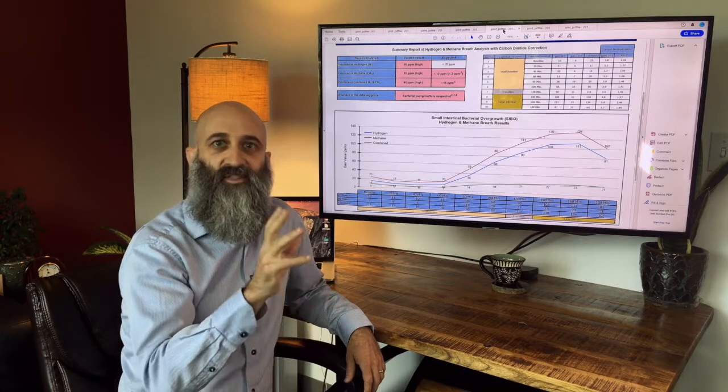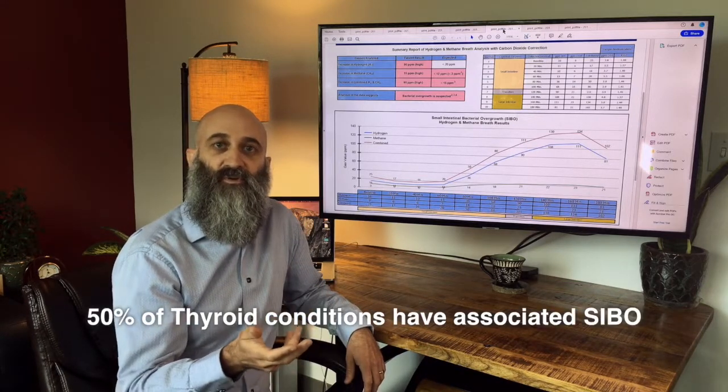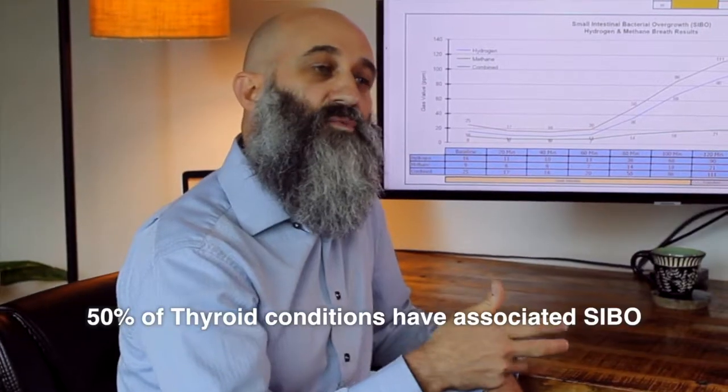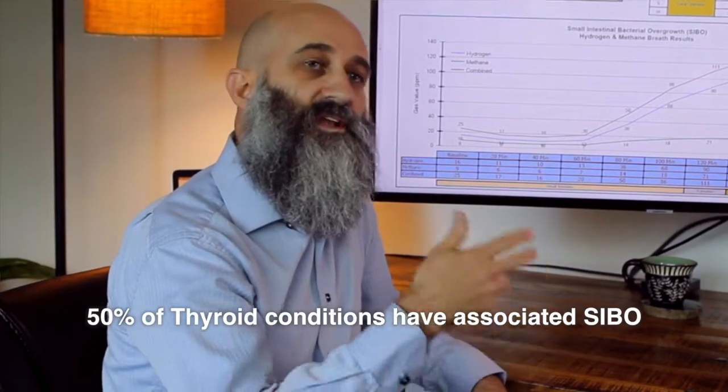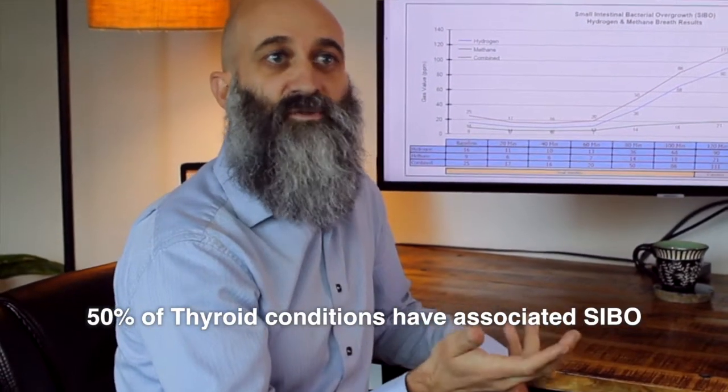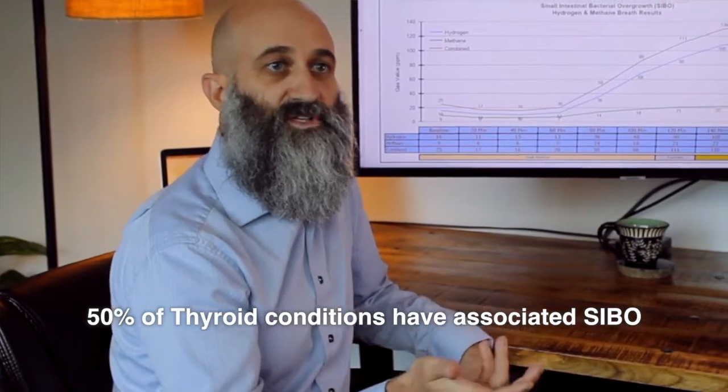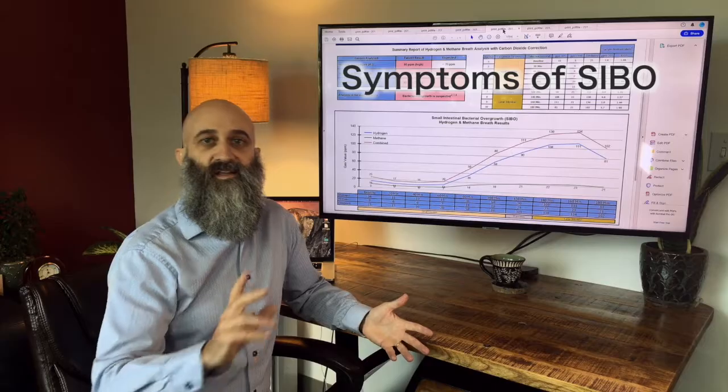Fifty percent of people with thyroid problems have SIBO, and when we treat SIBO we see an improvement in their actual thyroid levels and they don't need as much thyroid. I've seen people go off of thyroid medication, and some of these people didn't have any symptoms of SIBO.